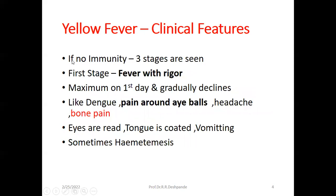Regarding clinical features, if there is no immunity, three stages are seen. The first stage is fever with rigor. Fever with chill is common, but a very strong feeling of cold is called rigor. Fever with rigor is common in malaria, urinary tract infections, and yellow fever. The fever is maximum on the first day and gradually declines.